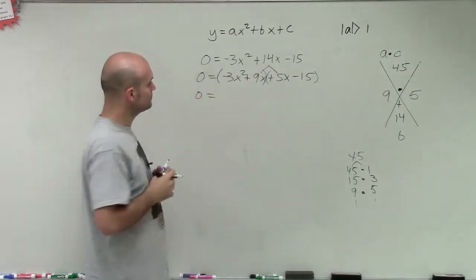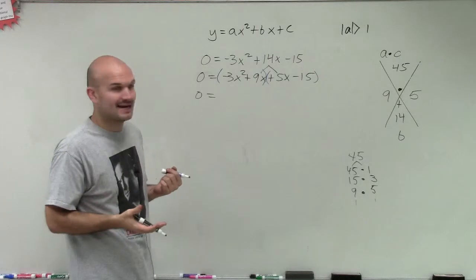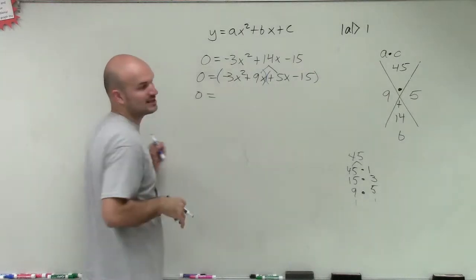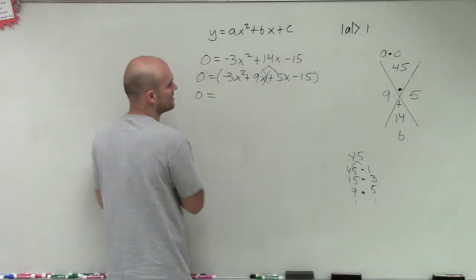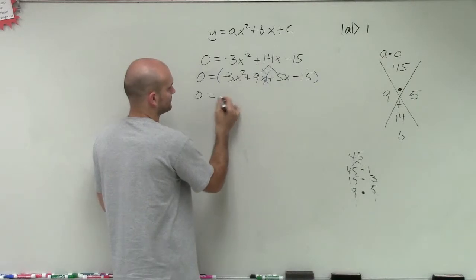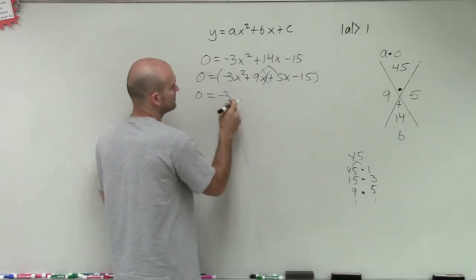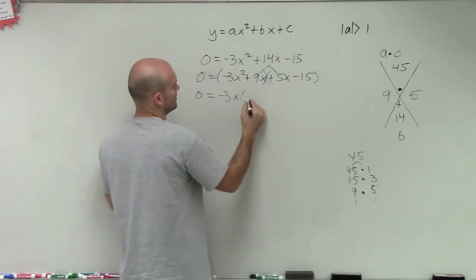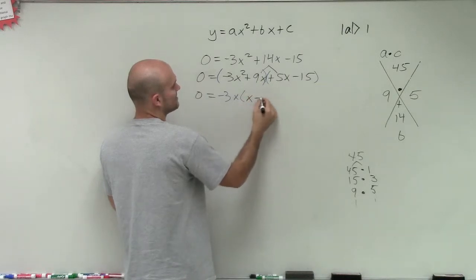So when doing this, I look at my first two terms and I say, what does negative 3x squared and 9x have in common? And we always like to factor out that negative number. So I can say that they both share a negative 3x. Let's use blue. I like blue.